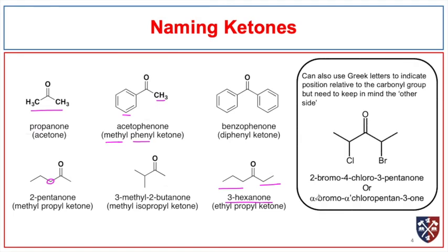We could also use Greek letters to indicate position relative to the carbonyl group in ketones, but we have to be careful because we have carbons on both sides. In this instance, the compound is 2-bromo-4-chloro-3-pentanone. We could also call it alpha-bromo, alpha-prime-chloro-pentan-3-one, but 2-bromo-4-chloro-3-pentanone is the IUPAC name.